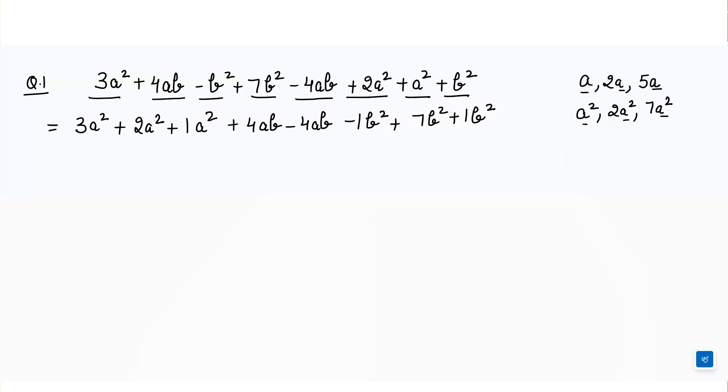Now, it's just same as we add the numbers. 3 plus 2 plus 1. That means it is equals to how many a square? 7a square. Then plus 4 minus 4 means 0. We don't write down 0 here. So it would be just 0. We can cancel them also like this.